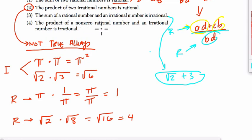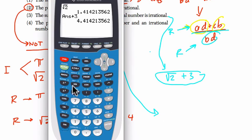Choice four. The product of a non-zero rational number and an irrational number is irrational. That's true as well. For a very similar reason. If you take the square root of two and multiply it by three, what's going to happen?